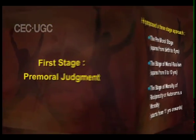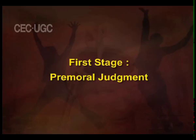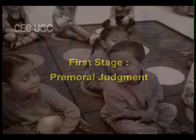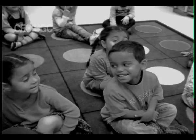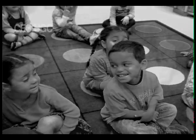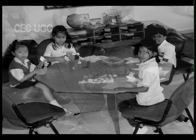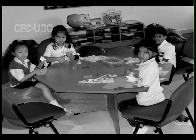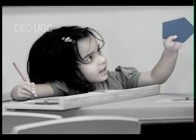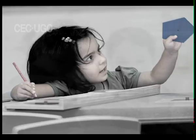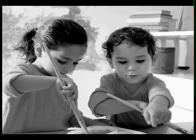The first stage of premoral judgment is found among preschool children. In this stage, children simply do not understand the concept of rules and have no idea of morality, internal or external. They show little concern for rules. They do not try to play a systematic game and they play with the intention of winning, gaining satisfaction from the manipulation. They use different and strange rules to enjoy themselves. This stage coincides with the sensory motor and pre-operational stages of Piaget's cognitive theory.